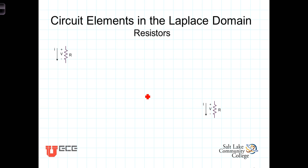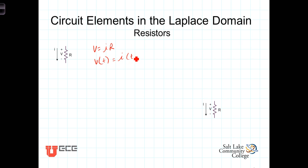First, looking at the simple resistor, where we know that V is equal to I times R. More specifically, we're now going to be talking about V as a function of time and I as a function of time. So let's write it as V of T is equal to I of T times R.